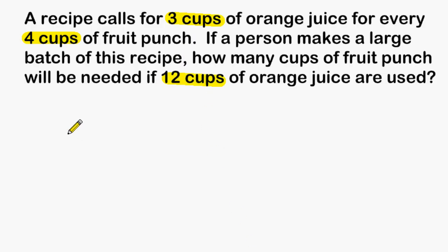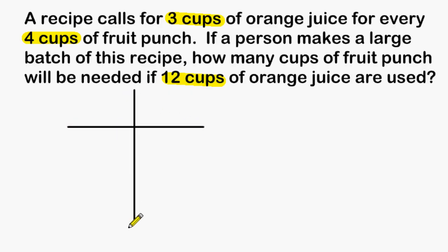One way of solving this problem is by creating a ratio table. In our ratio table, in one column we are going to write orange juice and fruit punch on the other side.